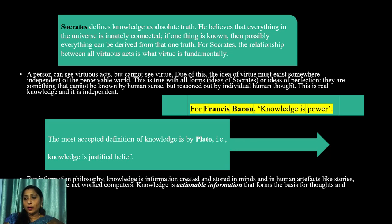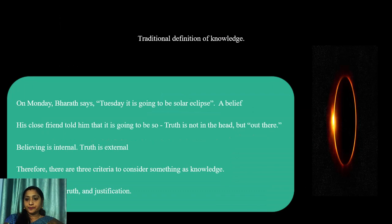The most accepted definition of knowledge is by Plato: knowledge is justified true belief. For information philosophy, knowledge is information created and stored in minds and in human artifacts like stories, books and internet-worked computers, and knowledge is actionable information that forms the basis for thoughts and actions. With these descriptions, we can say knowledge means what is or can be known by an individual or by humankind. Knowledge applies to facts or ideas acquired by study, investigation, observation or experience. Traditionally, according to philosophers, to call anything a piece of knowledge it should fulfill three conditions: belief, truth and justification.